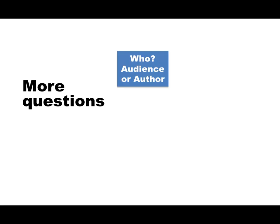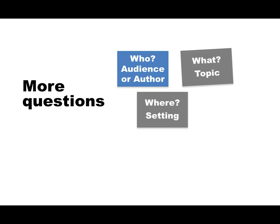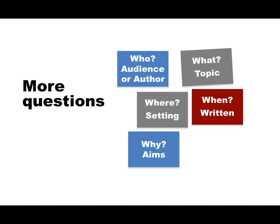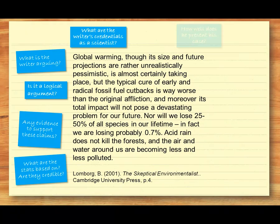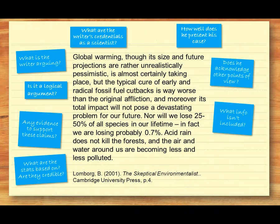You could ask about the author and their credentials, the ideas they're presenting, and the techniques they've used. For example, if you're examining a scientific journal article, you might ask: what's the thesis or main argument? Is the argument logically presented and rational, and what evidence does the writer present to support their argument? Also, have they presented all aspects of the issue, or have they just given the information that supports their argument? We can apply some of these questions to this passage, which comes from a controversial book about global warming. By asking these questions, you are challenging the text, rather than just accepting its claims. Remember, you don't have to have answers to all these questions — just by asking them and thinking about them, you are actively engaging with the text and showing that you are thinking critically.